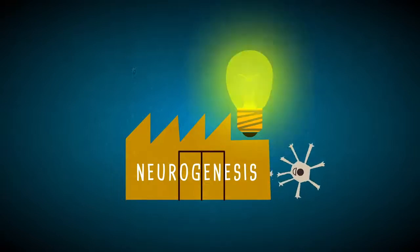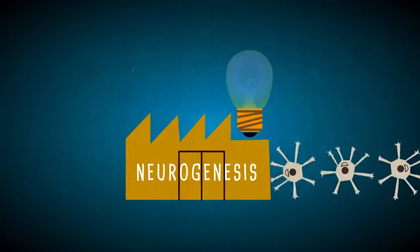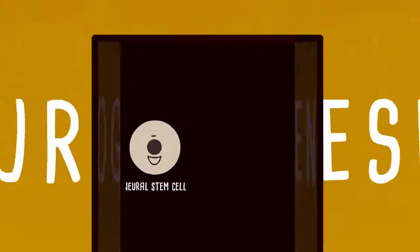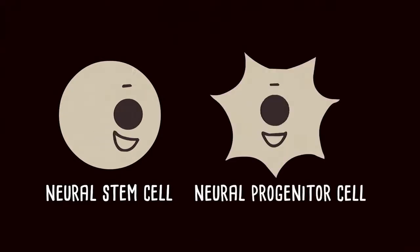This process, known as neurogenesis, involves dedicated brain cells called neural stem cells and progenitor cells, which manufacture new neurons or replace the old ones.